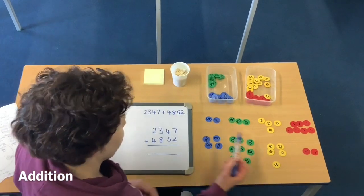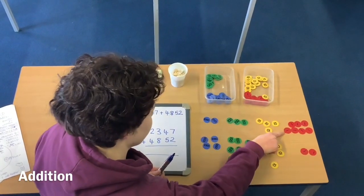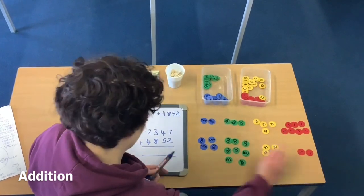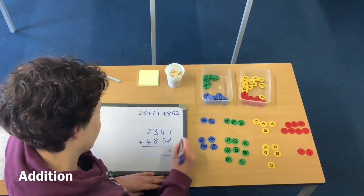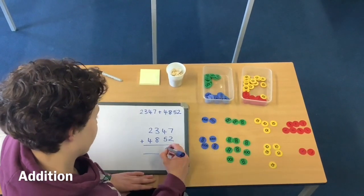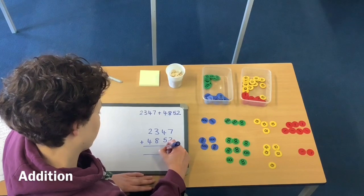So I look at my ones column. I've got 7 ones add 2 ones. So in total I've got 9 ones. Then I look at my tens column. I've got 4 tens add 5 tens. So in total I've got 9 tens as well.